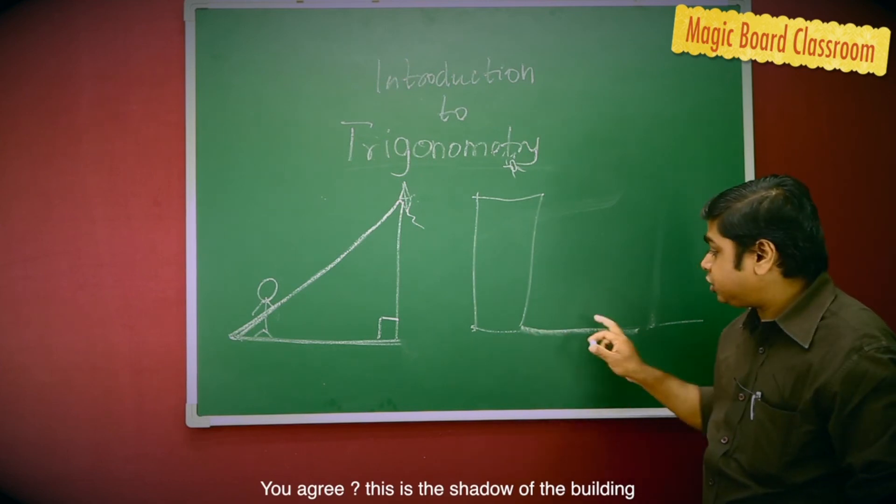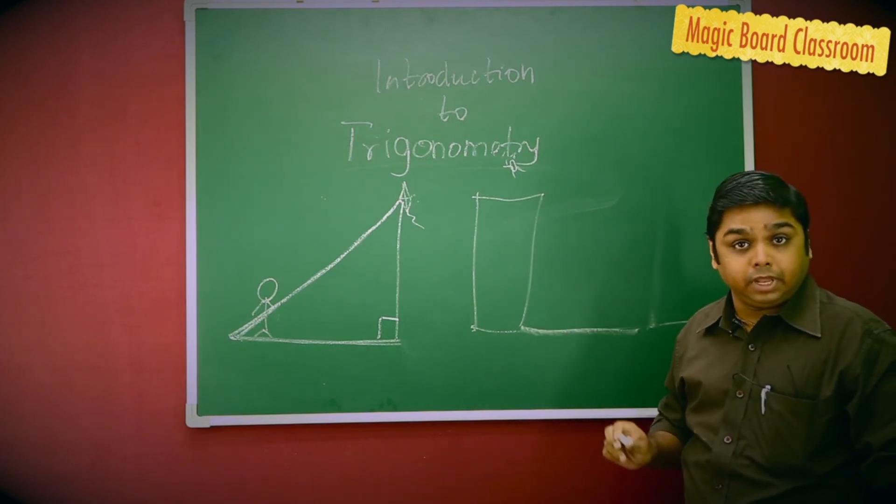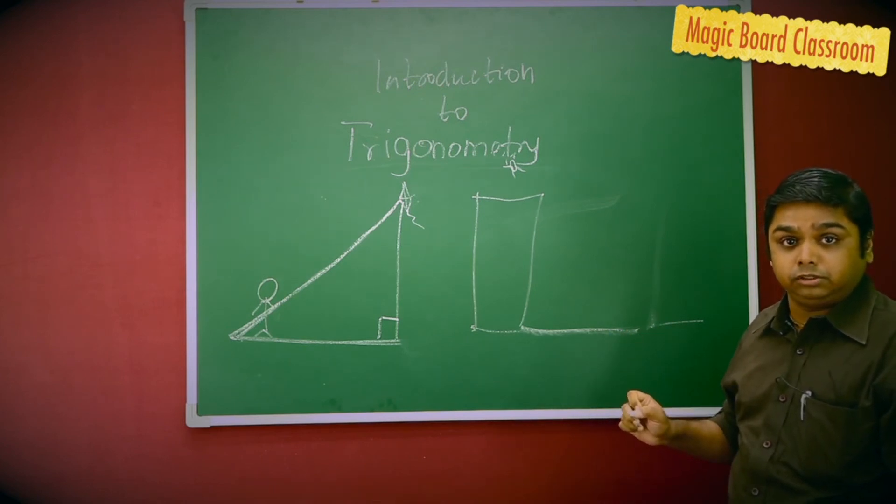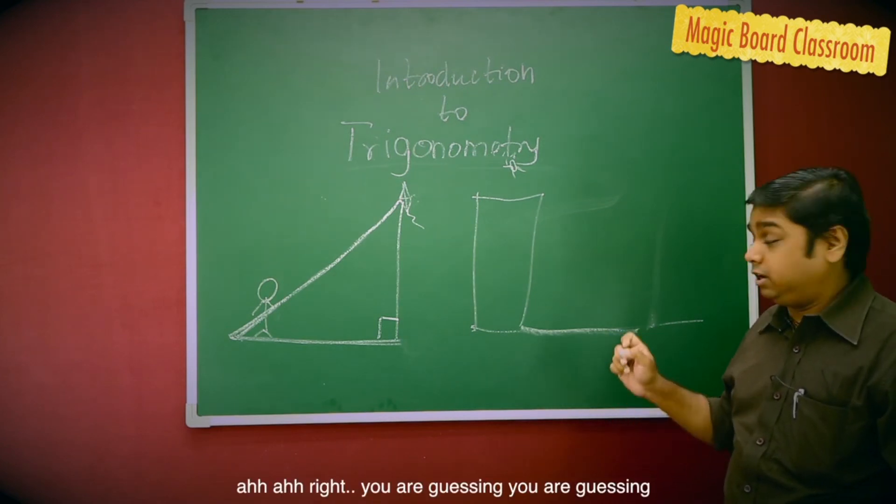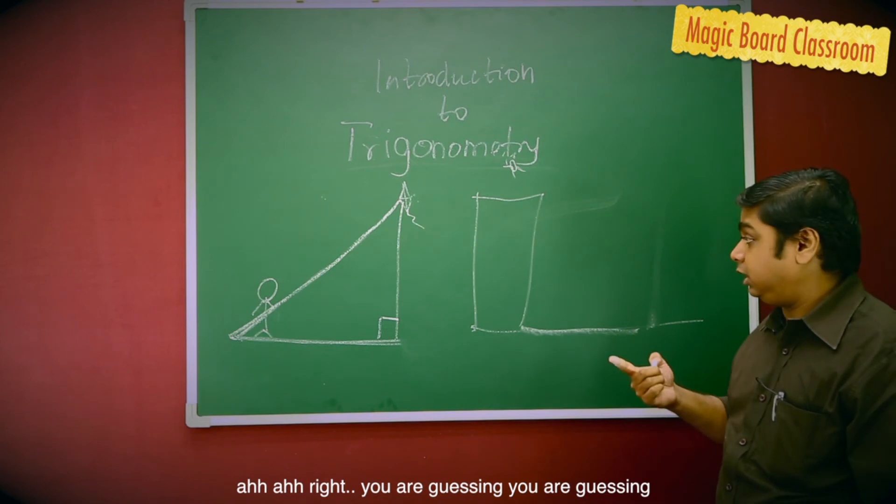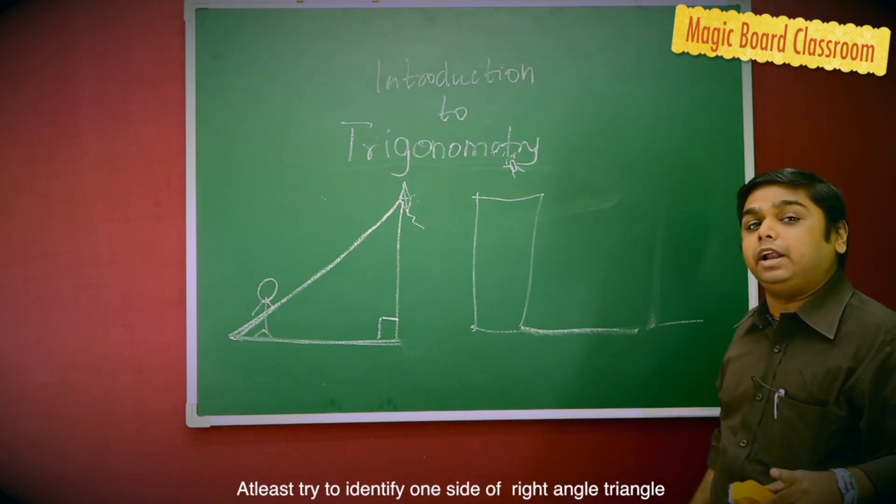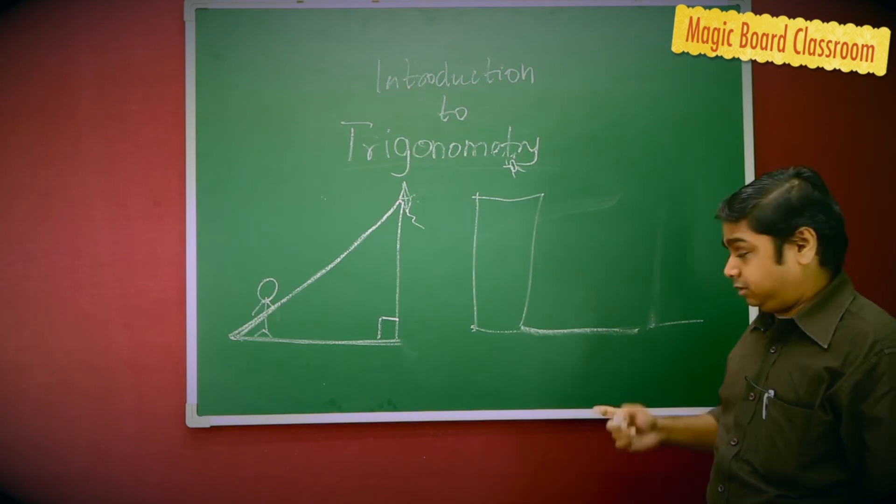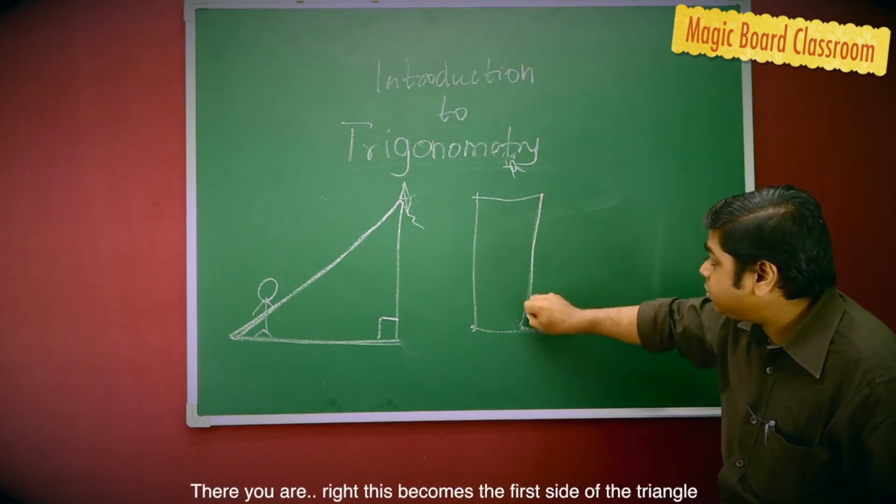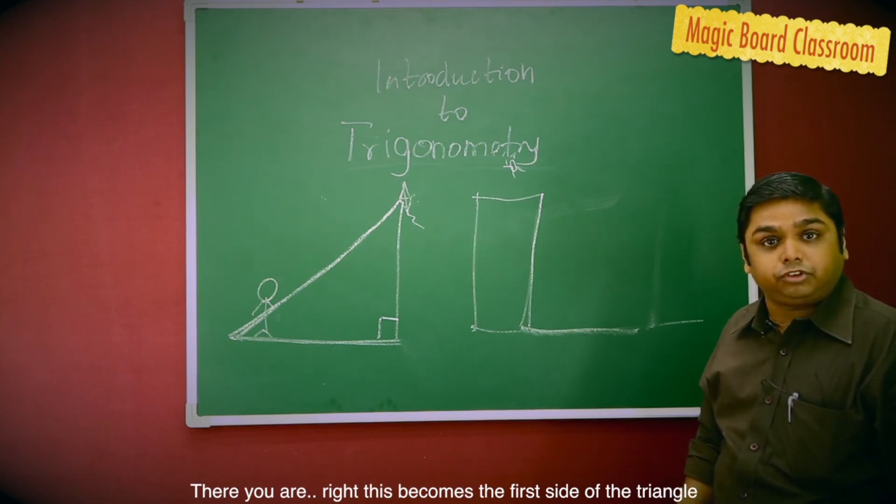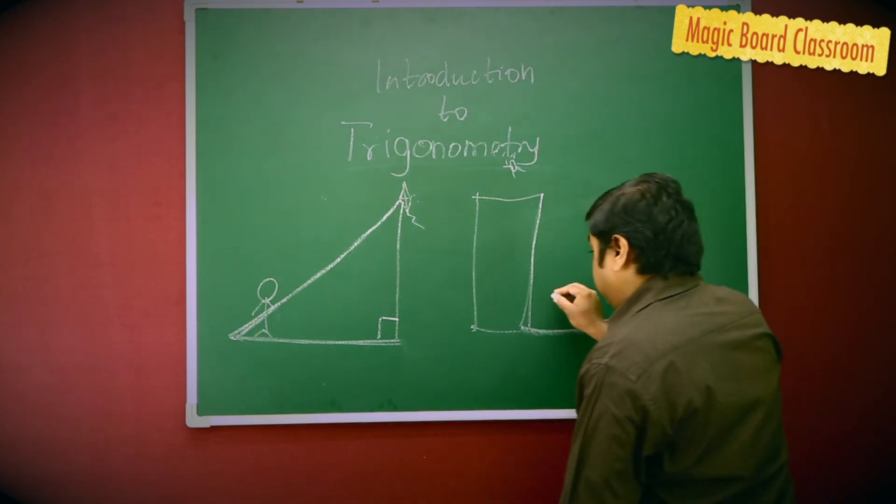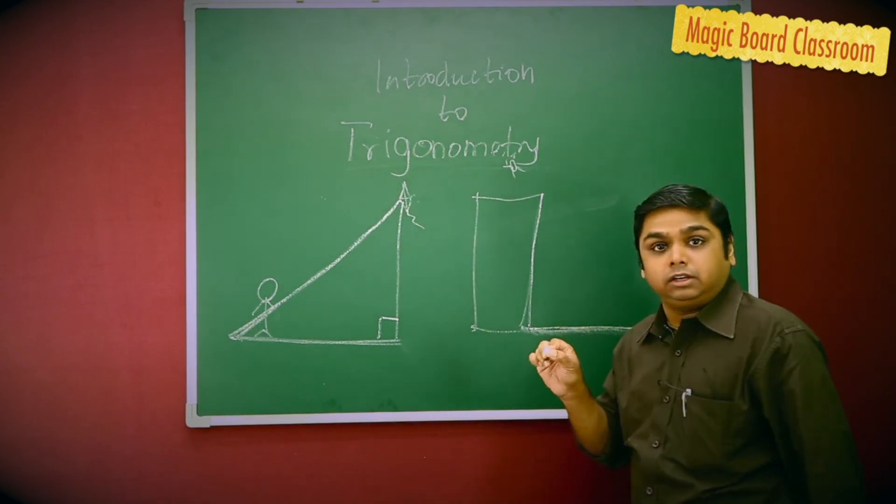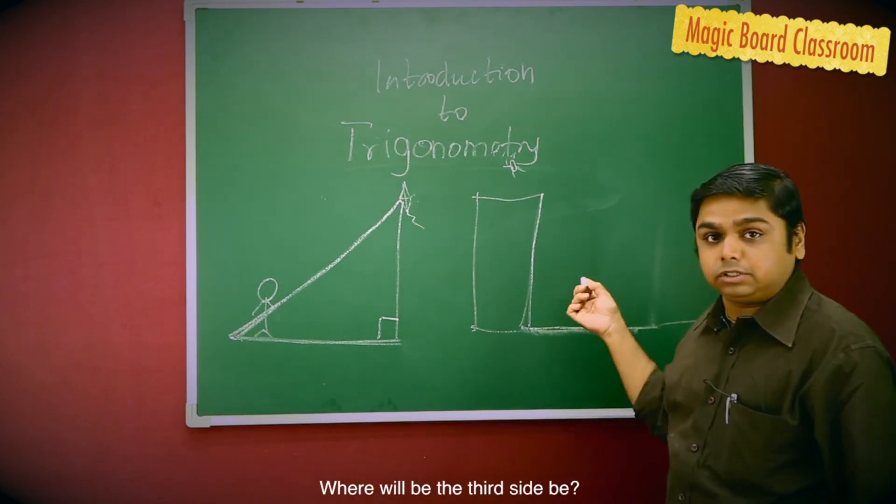You agree? This is the shadow of the building. Can you see a right angle in this particular situation? At least try and identify one side of the right-angled triangle. There you are. This becomes the first side of the triangle. This becomes the second side of the triangle.